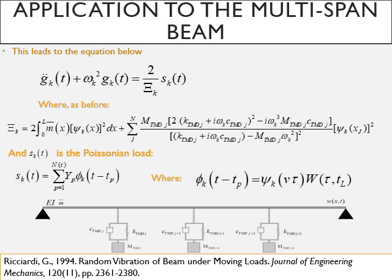Where Sₖ(t) is the Poissonian load. As before ψₖ is the modal mass. To illustrate, to expand on the Poissonian load, I should mention that this is a filtered Poisson process. We see this here in φₖ at (t-tₚ) where we use the eigenfunction ψₖ with v the velocity and τ the time in this case and the window function of course to remove the forcing action.